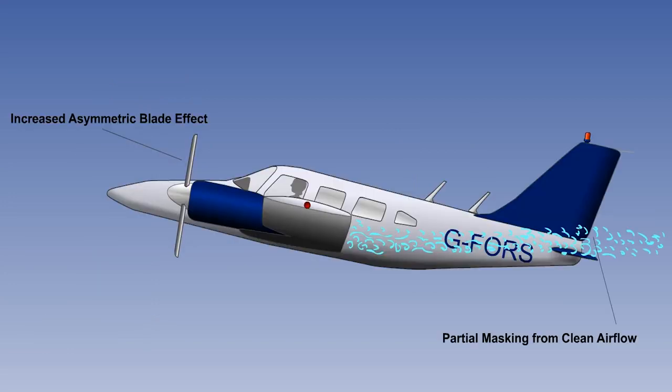Any weight increase will require a higher angle of attack at any given speed. This will have the result of increasing asymmetric blade effect with a bigger yawing moment and partially masking the fin and rudder, making them less effective.